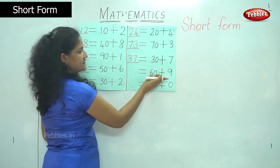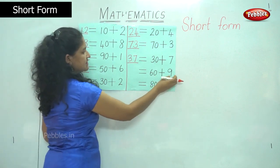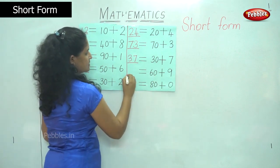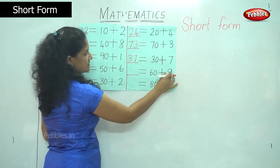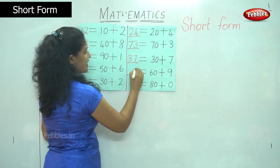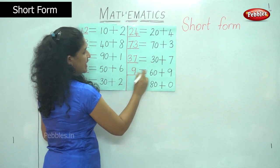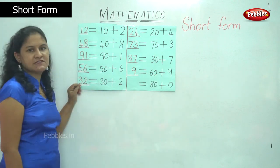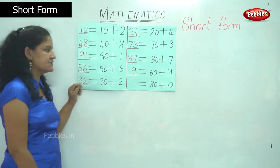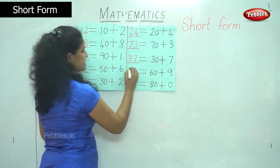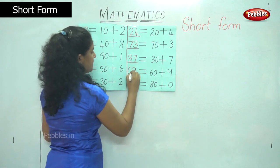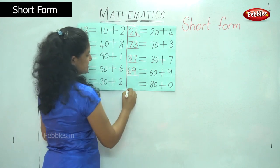The next one I have is 60 plus 9. So in the ones place I have number 9, and in the tens place I have 60 or 6 tens, that gives me the number 6. So my answer is 69.